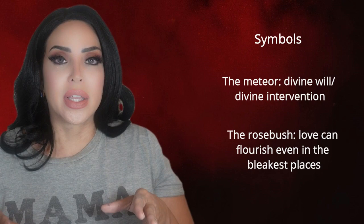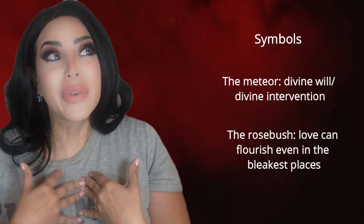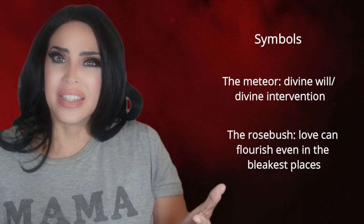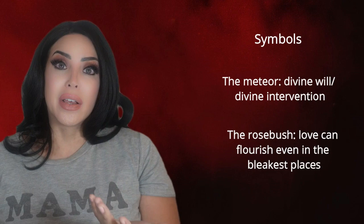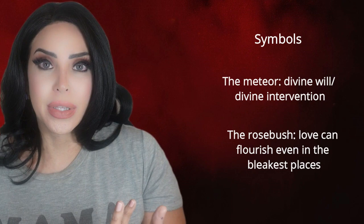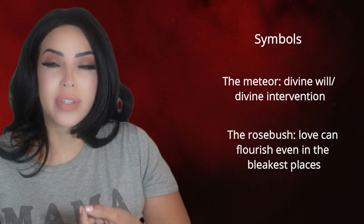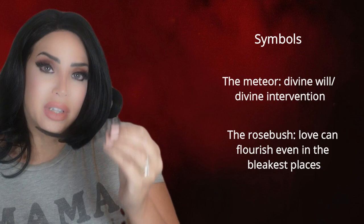For symbols: the meteor represents divine will or divine intervention — almost like saying God is listening even when no one else is. The rose bush is my favorite symbol. In chapter one, right by the prison door, everything is dark and dreary and gray, but in the middle of all that there's this rose bush. Roses symbolize love, and the message is that nature — created by God — and love can grow even in the ugliest places. The love between Hester and Arthur flourishes, the love between Hester and Pearl flourishes despite all the judgment.